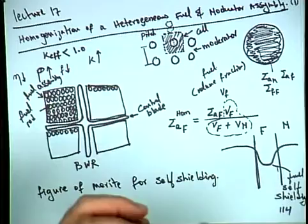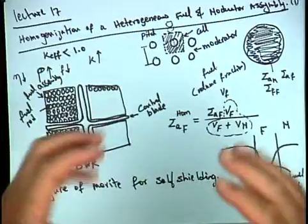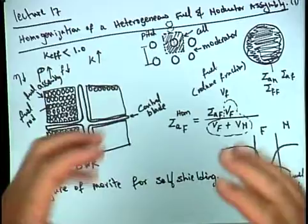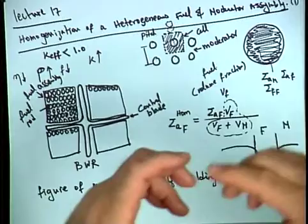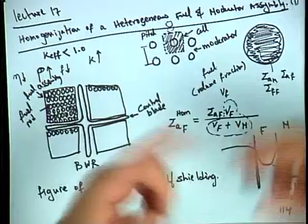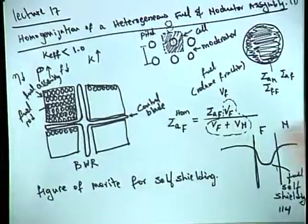In the plot shown here, you see one assembly — or four assemblies — with a cruciform control rod inserted between them. Each assembly contains fuel pins. We take one fuel pin surrounded by moderator as our unit cell and attempt to solve the diffusion equation for that unit cell.